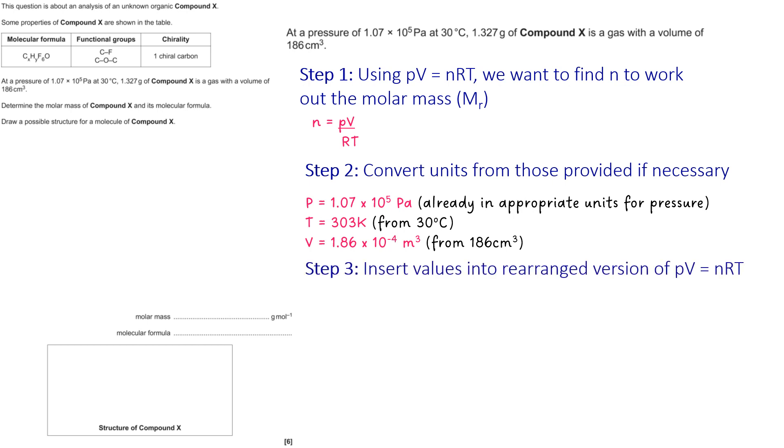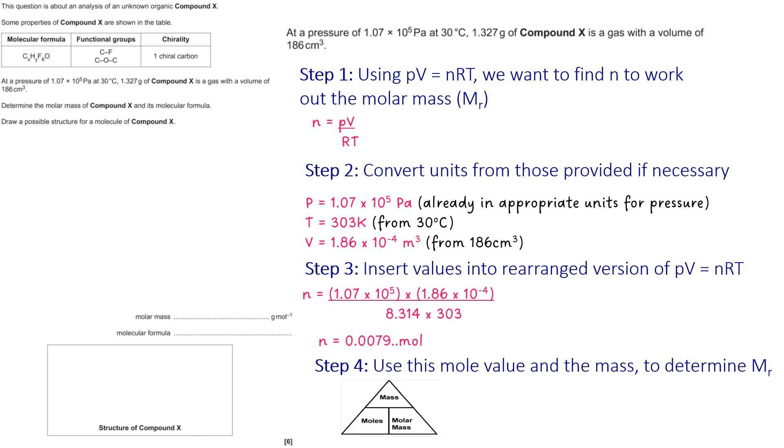Those values go into the rearranged version of PV = nRT which gives me 0.0079 moles. I'm keeping my calculator value, so you can see the dot dot there signifies that. This mole value in the calculator and the mass that's provided, which is 1.327 grams, goes into the moles and mass triangle which allows me to work out 168 grams per mole.